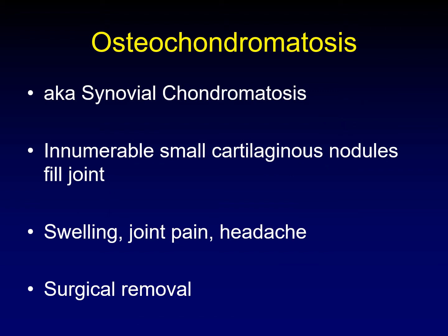Osteochondromatosis — which people are starting to call synovial chondromatosis, although I like the historical term better — is when innumerable small cartilaginous nodules fill a joint space. It's more common in the shoulders than in the temporomandibular joints, but it's reasonably common in the TMJ. It presents with swelling, pain in the joint, and headache, and it is treated with surgical removal.